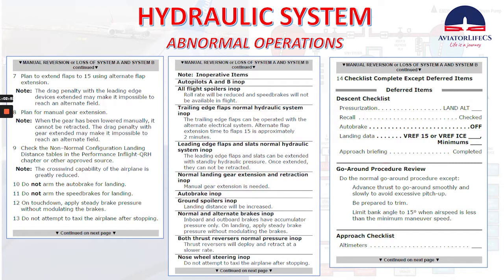Inoperative items with loss of both systems: both autopilots inoperative, all flight spoilers inoperative, trailing edge flaps normal hydraulic system inoperative, leading edge flaps and slats normal hydraulic system inoperative, normal landing gear extension/retraction inoperative, auto brake inoperative, ground spoilers inoperative, normal and alternate brakes inoperative. On landing, apply steady brake pressure without modulating the brakes. Inboard and outboard brakes have accumulator pressure only. Both thrust reversers normal pressure inoperative — deploy and retract at a slower rate. Nose wheel steering inoperative — do not attempt to taxi after stopping. Checklist complete except deferred items. Descent checklist: auto brake off, landing data Vref 15 or Vref ice.